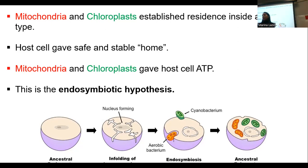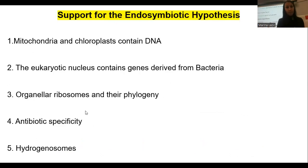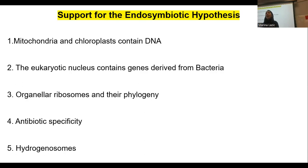The point is that the host cell gave mitochondria and chloroplasts a stable home, while they gave the host cell production of ATP. This is the endosymbiotic hypothesis. The ancestral prokaryote — possibly an archaeophile — developed infoldings of membranes, which made space for the entrance of cyanobacteria and mitochondria. They established their existence inside the ancestral eukaryotic organism. There are five key reasons why the endosymbiotic theory makes sense, and each will be explained in detail.